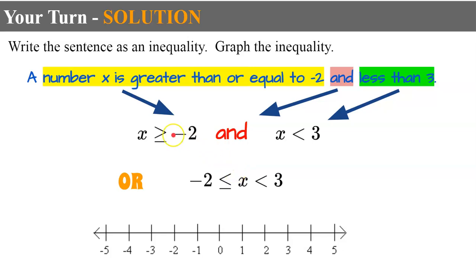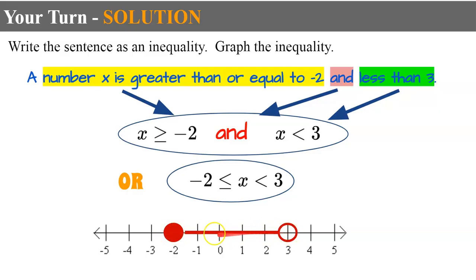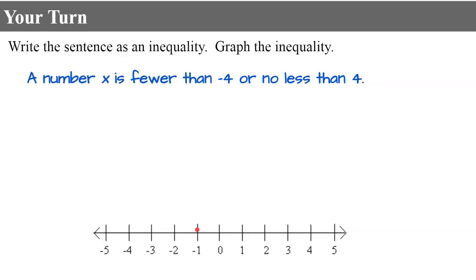We can also write it in combined form by taking the AND out: negative 2 less than or equal to x less than 3. When flipping the variable to the left, you must reverse the inequality symbol. As a general rule of thumb, the number on the far left is the least in value. Now let's graph: closed circle on negative 2, shaded right; open circle on 3, shaded left. The graph shows solutions from negative 2 up to but not including 3 — the intersection of the two individual graphs.